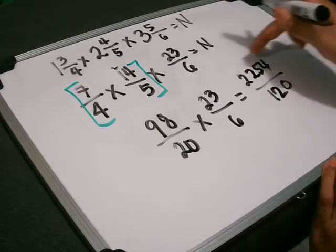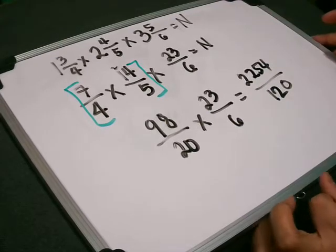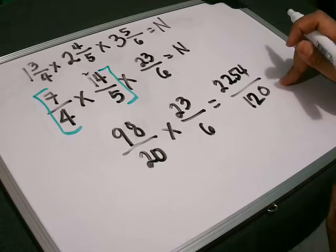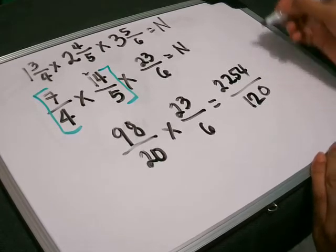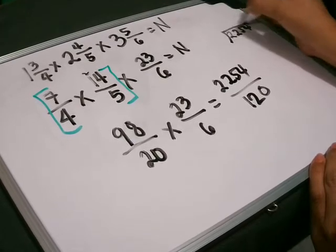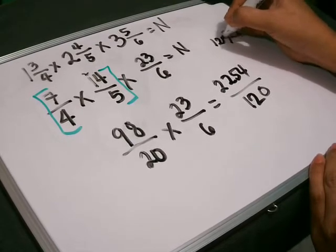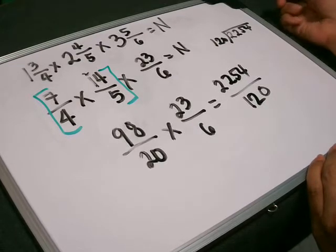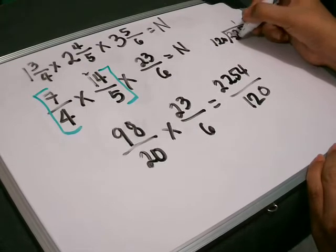Because that is an improper fraction, we have to reduce this to lowest term. So 2,254 divided by 120. We have 1, we have 120.